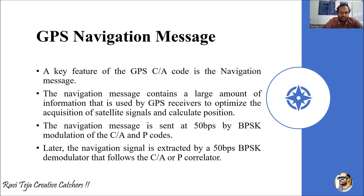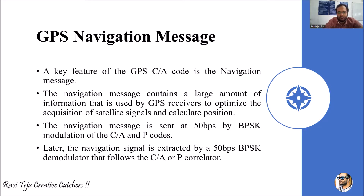This transmission uses BPSK modulation with respect to C/A as well as P code. Later, this navigation signal is extracted at 50 bps using a BPSK demodulator. This demodulator follows the C/A or P correlator.